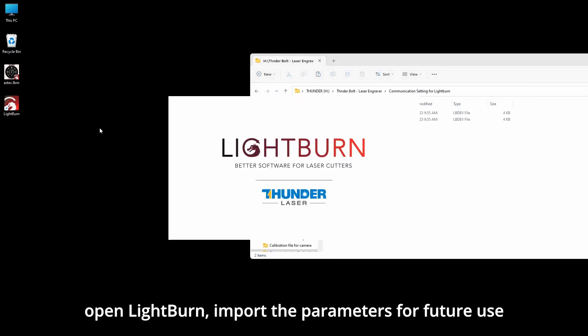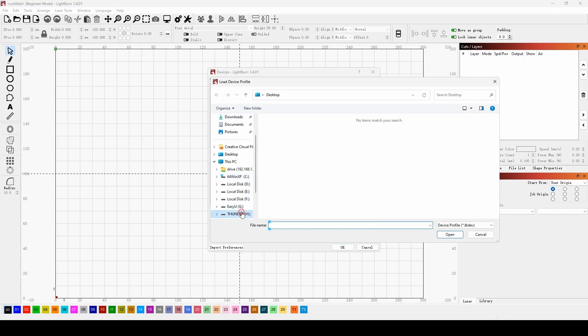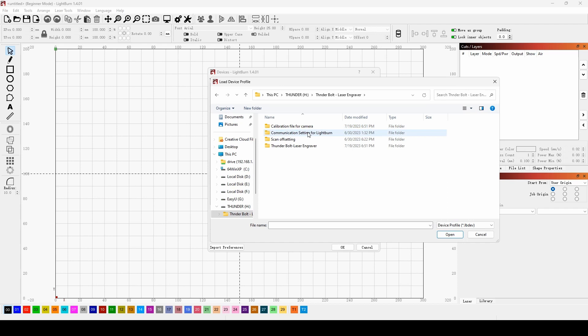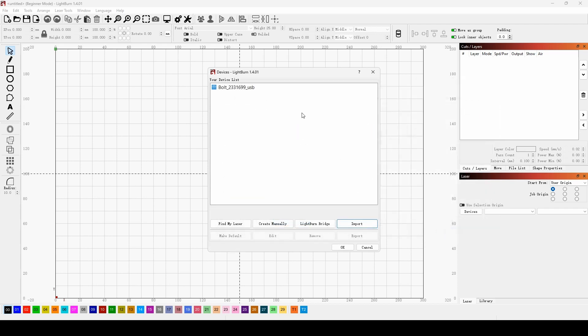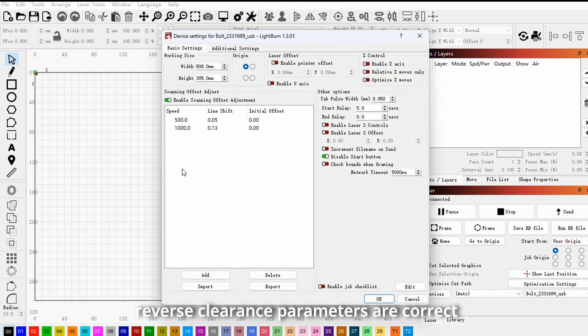Open Lightburn. Import the parameters for future use. Then we can check if the reverse clearance parameters are correct.